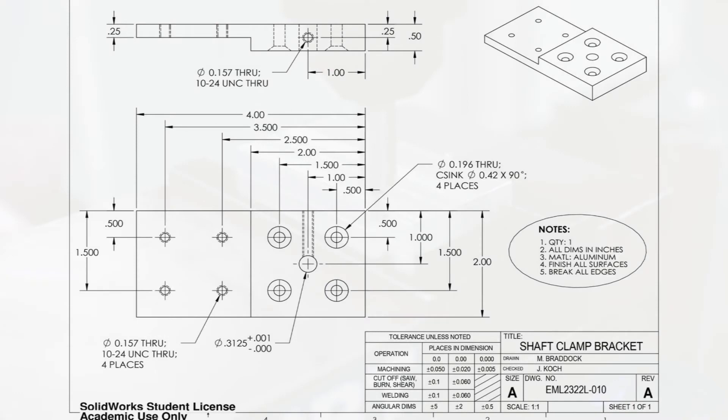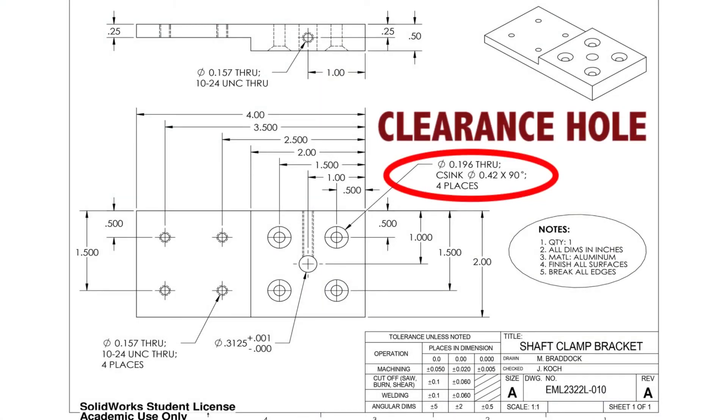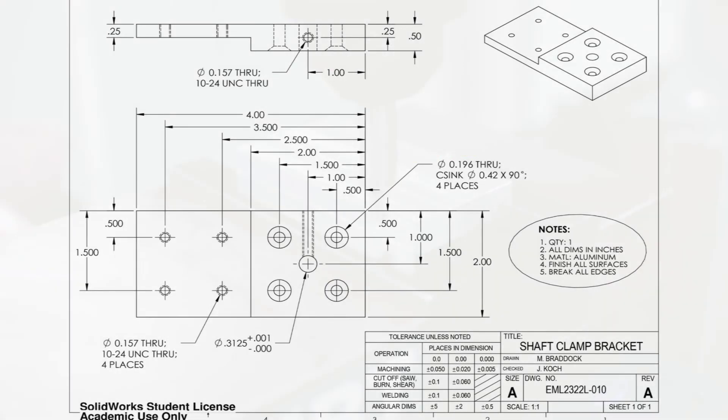The 196 diameter feature is a clearance hole for a number 10 fastener. This will allow a number 10 fastener to freely pass through the workpiece. C-sink stands for countersink. A countersink is a feature used to provide clearance for flat head screws. This is rarely seen in lab parts.